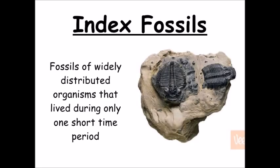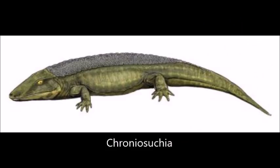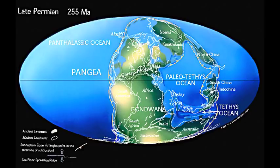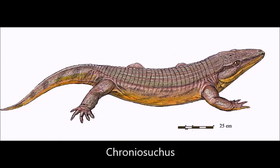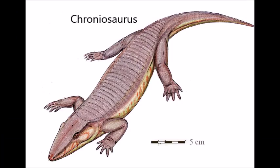Now, most of the time, animal index fossils are invertebrates, or very small vertebrates, because they are more short-lived and susceptible to climatic changes. However, some tetrapods can also be index fossils. An example of this is members of the reptilian morphorder Croniosuchia. Late Permian Russian stratigraphic ages called the Vyatkian and Severodvinian are defined by the presence of Croniosuchians — Croniosuchus paradoxus for the former, and Croniosaurus levis for the latter.